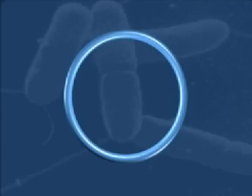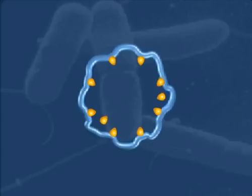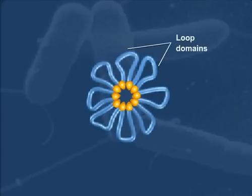Part of this compaction comes through the formation of loop domains, where segments of DNA are folded into loop-like structures that are held in place by DNA binding proteins. The formation of loop domains compacts the DNA about tenfold.